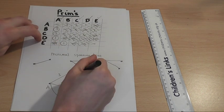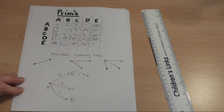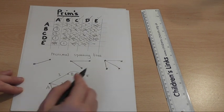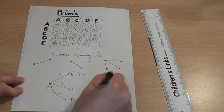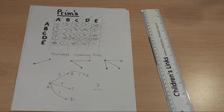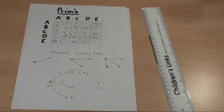And there's my minimal spanning tree, total weight: three, four, five, six, seven. And that is Prim's algorithm in action.